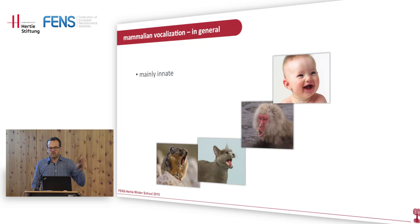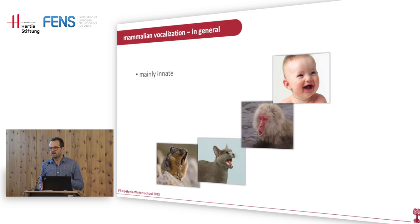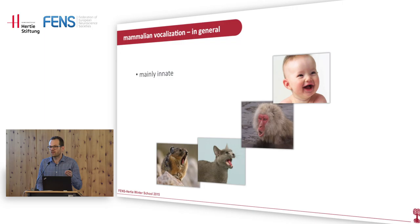In contrast to human speech, mammalian vocalizations are mainly innate — the animals do not have to learn the vocal patterns; they don't have vocal production learning in the same way we do. There are indications that some mammals may be able to perform vocal production learning, but these have not been thoroughly studied in the lab with controlled experiments. So based on current data, mammalian vocalizations are mainly innate.